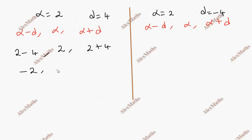This gives -2, 2, and 6. For the minus root: 2 minus -4 is 6, then 2, then 2 minus 4 which is -2. So the values are 6, 2, and -2.